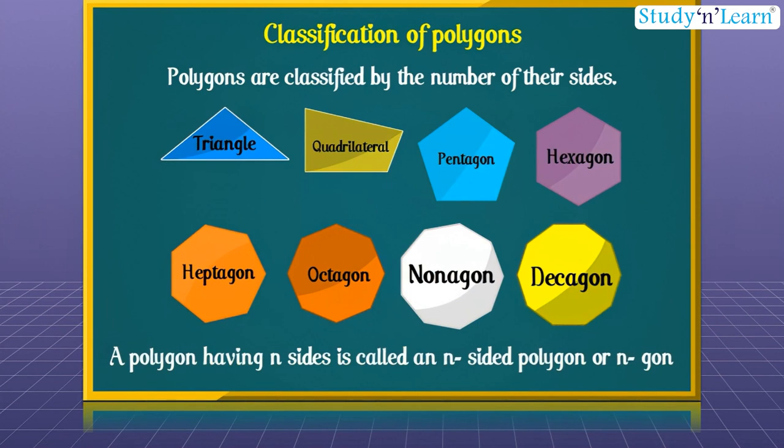And in general, a polygon having n sides is called an n-sided polygon or n-gon.